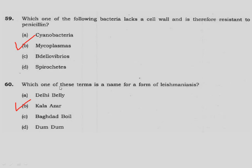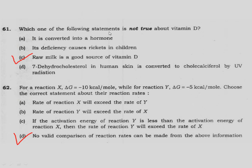Question 60: Which one of these terms is a name of a form of leishmaniasis? Question 61: Which one of the following statements is not true about vitamin D? It is converted into a hormone — this is right. Its deficiency causes rickets in children — this is right. 7-dehydrocholesterol in human skin is converted to cholecalciferol by UV radiation — this is right.